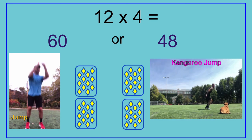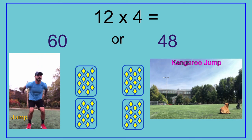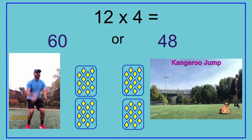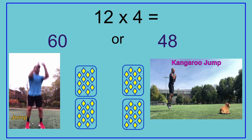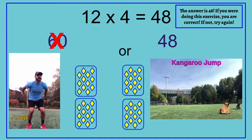12 times 4 equals — 60 or 48? The answer is 48. If you are doing this exercise, you are correct. If not, try again. 12 times 4 equals 48.